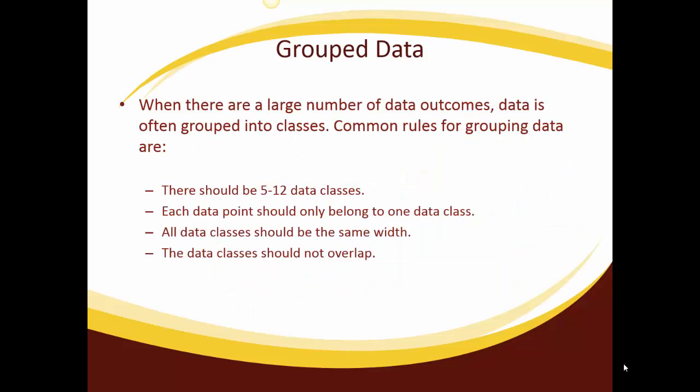When there are a large number of data outcomes, data is often grouped into classes. Common rules for grouping data are there should be between 5 and 12 data classes. Each data point should only belong to one data class. All data classes should be the same width and the data classes should not overlap.